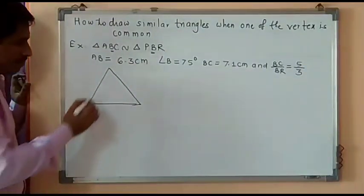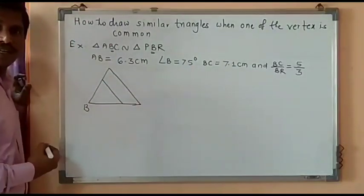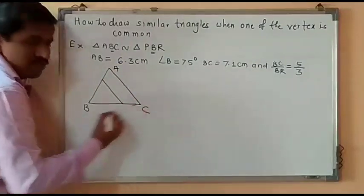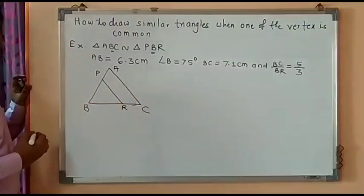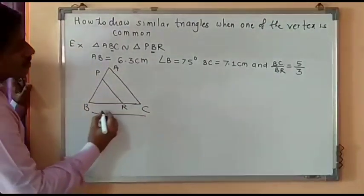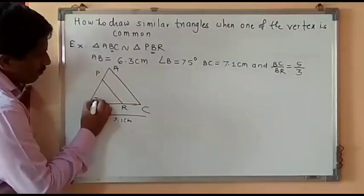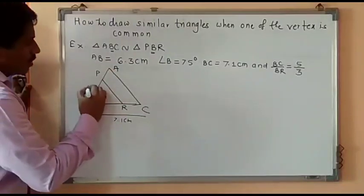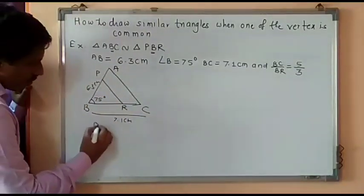Since ABC is the larger triangle, I will label this as ABC and this one as PBR. We are given BC is 7.1 cm, angle B is 75 degrees, and AB is 6.3 cm. So, this is our rough figure.